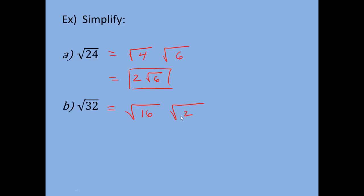16 times 2 is what gives me 32. Once we've done that, the square root of 16 we evaluate as 4. Notice we don't write the square root symbol anymore because we took the square root of 16. So we have 4, and then the square root of 2 just stays — it doesn't break down any further.